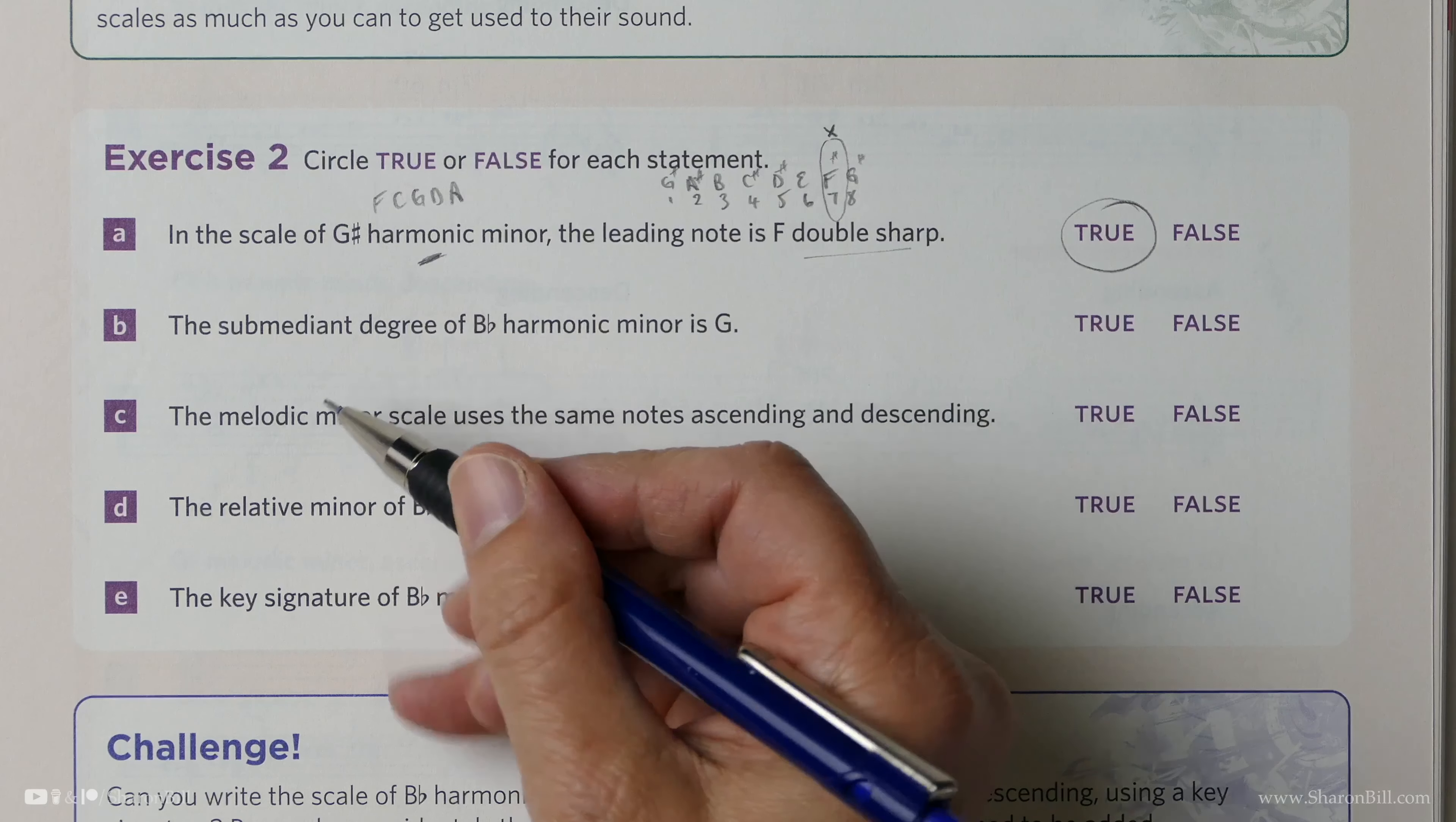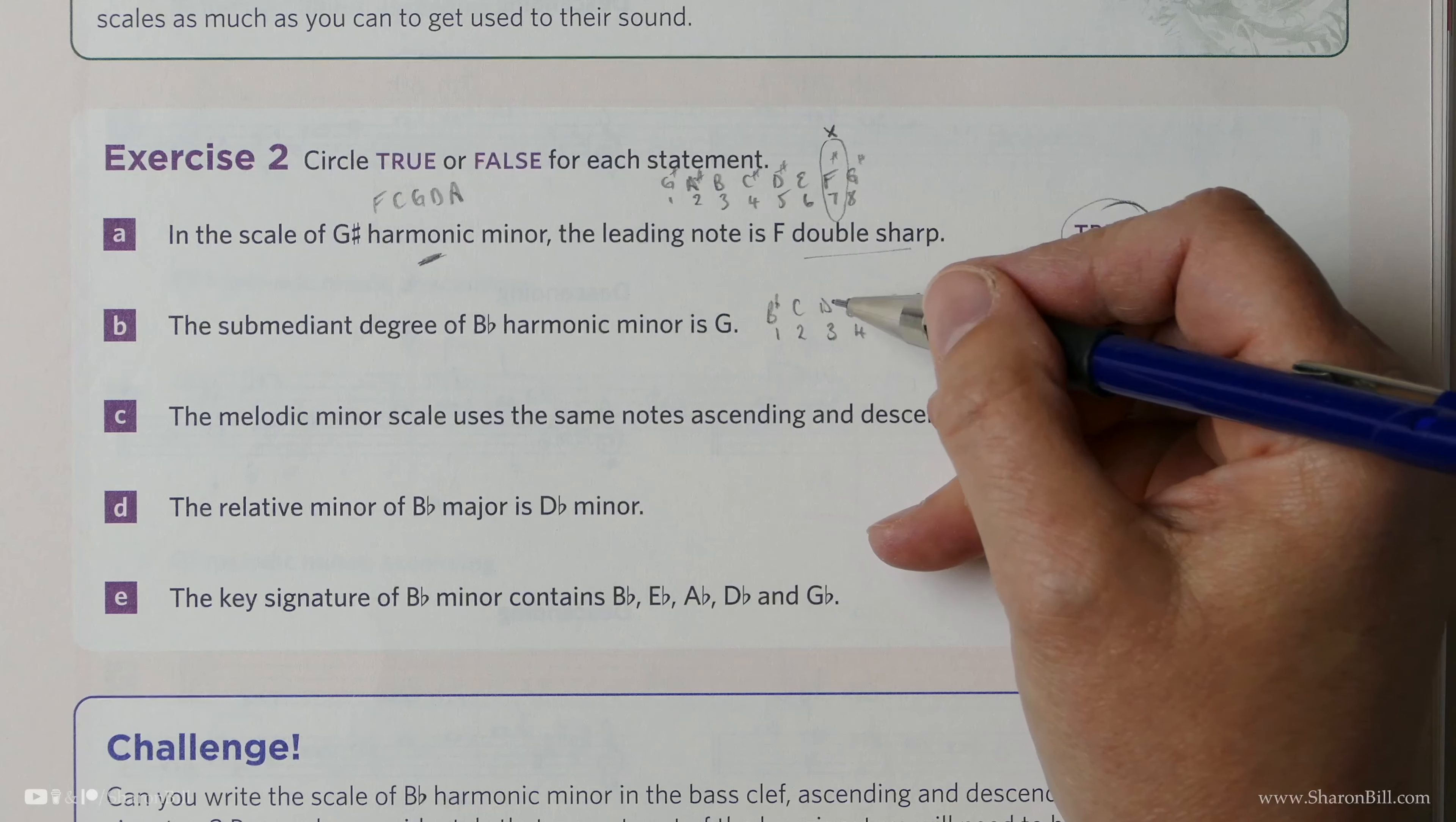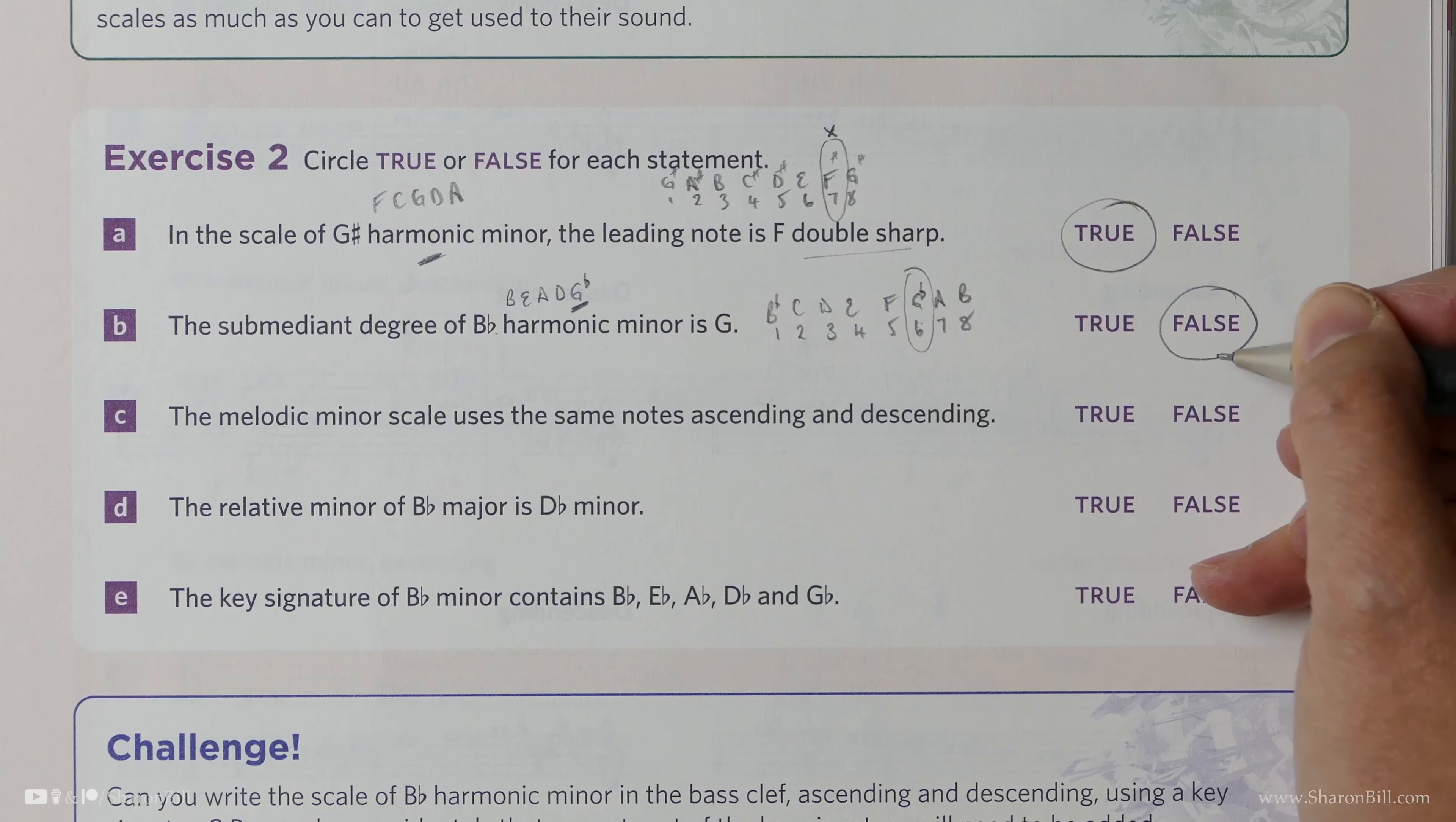Is it true or false that the submediant degree of B-flat harmonic minor is G? Let's think about this. So the degrees of the scale are 1, 2, 3, 4, 5, 6, 7, 8. Starting on B-flat, we'll let the key signature do the rest: B, C, D, E, F, G, A, B. The submediant degree of the scale is the sixth, so it's here. However, we're not quite there yet, because B-flat minor is related to D-flat major, which has a key signature of B-flats, E-flats, A-flats, D-flats, G-flats. There's the clue. That's actually a G-flat, and so that's false.